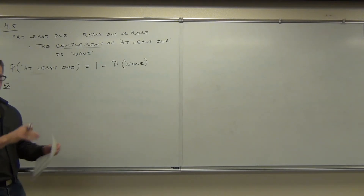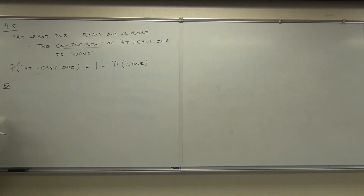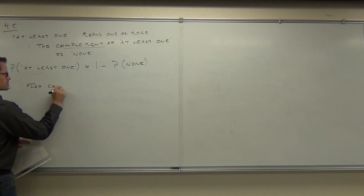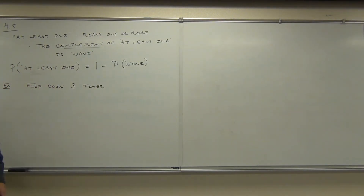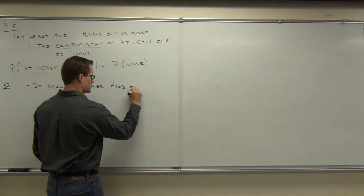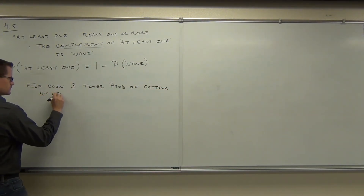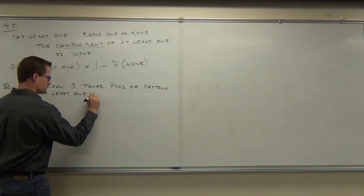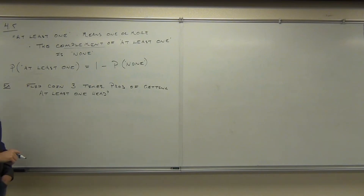For example, for a simple example: I'm going to give you a coin and you're going to flip it three times. Flip coin three times — what's the probability of getting at least one head? There's that term 'at least' again. What's the probability of getting at least one head in this case? So we're looking for the probability of at least one head.